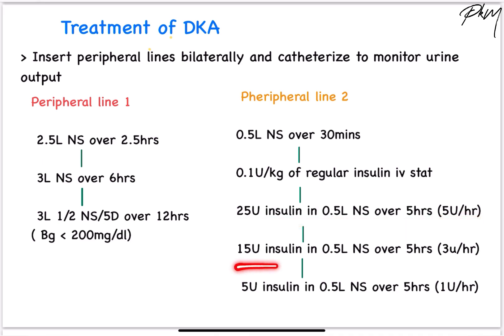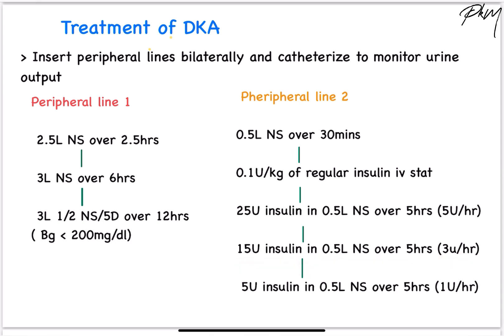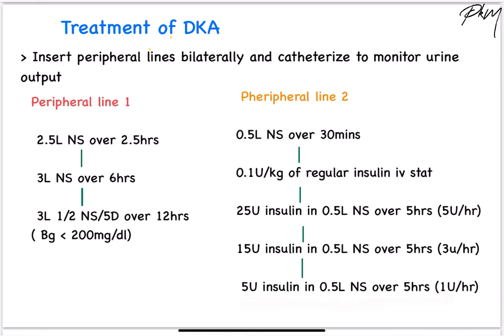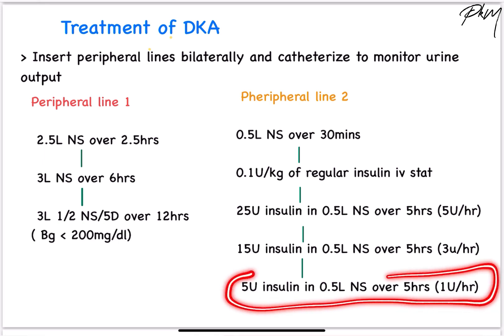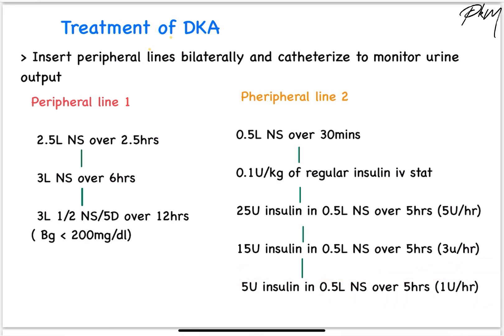Following which, give 15 units of insulin in 500 mL of NS over 5 hours. And lastly, 5 units of insulin in 500 mL of NS over 5 hours. This last set of infusion has to be coincided with subcutaneous insulin.